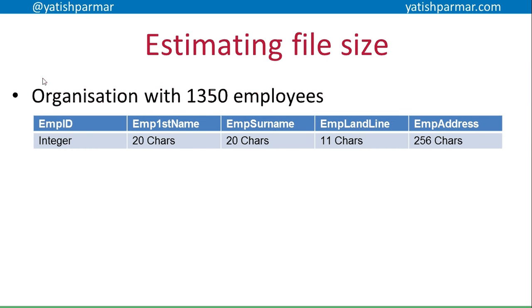So if we've got a particular organization — 1,350 employees — this is the data we want to store: employee ID, employee first name, surname, landline telephone number, and their address. Each of those fields has a particular amount of data associated with it. Remember, if you're looking at a direct access file, the empty characters will just be filled with spaces to preserve the file length so we can skip between records easily.